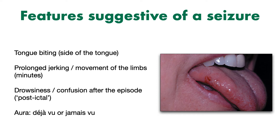The length of the episode is also important. In a seizure, there will be prolonged jerking and movements of the limbs, often lasting for several minutes. Whereas in other causes of loss of consciousness with seizure-like activity — for example, a syncopal event like a fainting episode or a sudden cardiac arrest — the jerking or movement of the limbs may only last for several seconds. Another important feature is whether there was a post-ictal period. Post-ictal refers to abnormal or altered consciousness following a seizure. Typically, patients can be quite drowsy and confused, and this can last for some time. If there was no post-ictal period and the patient recovered very quickly, then this is less likely to be a seizure.